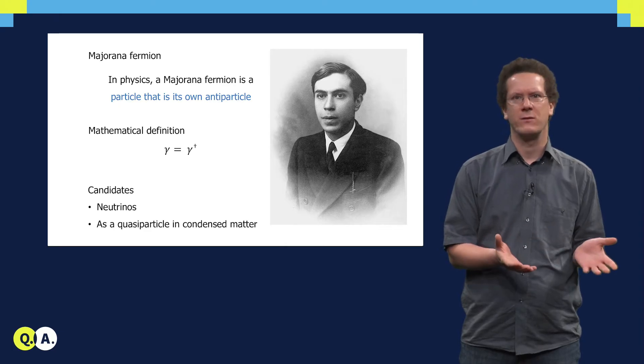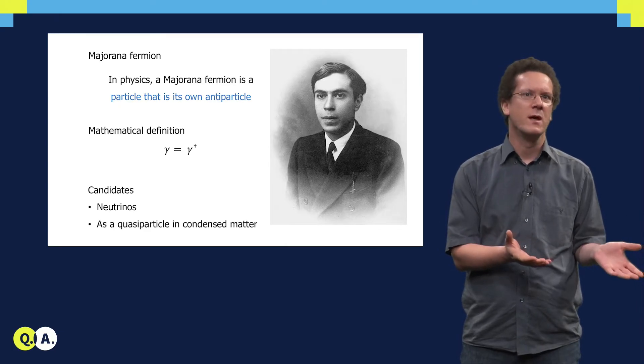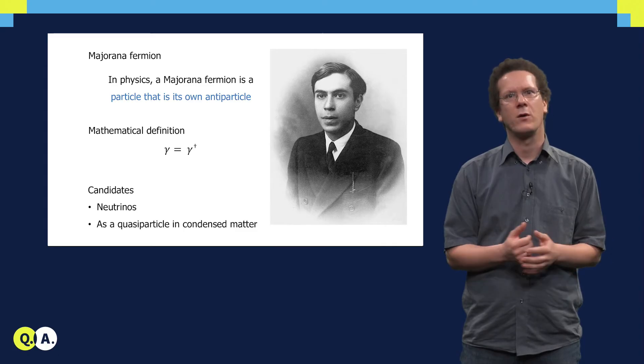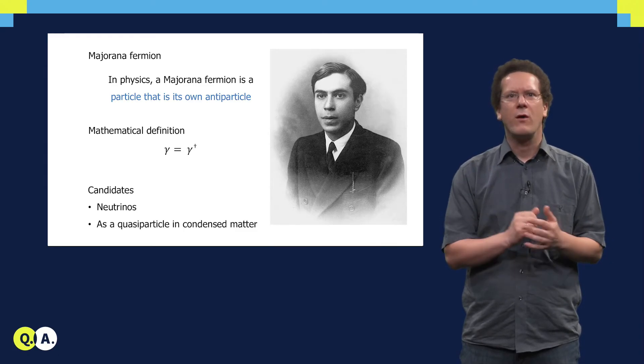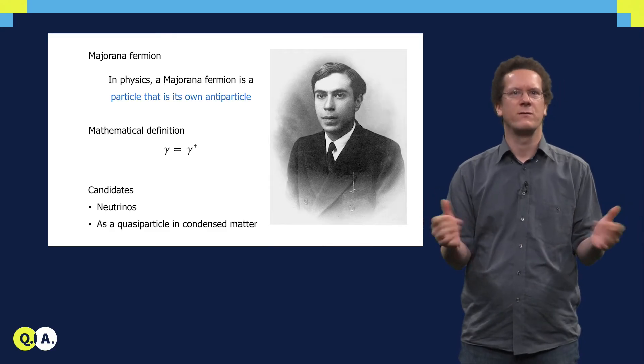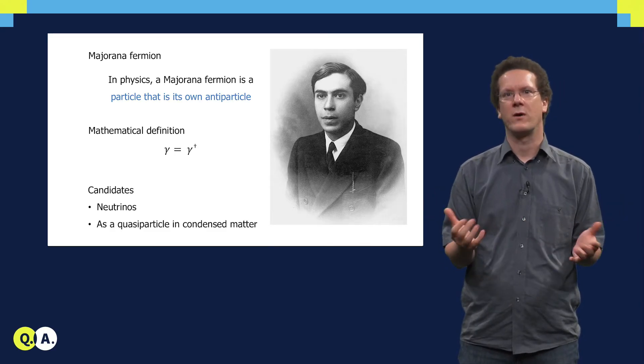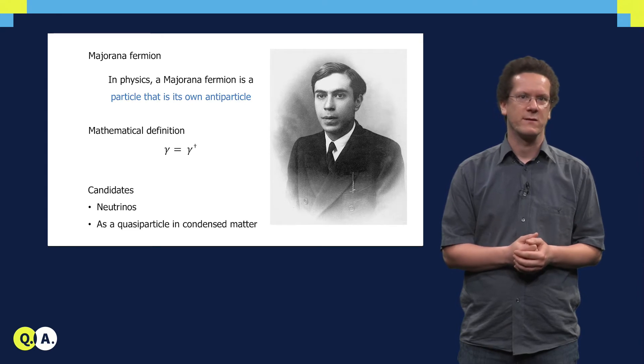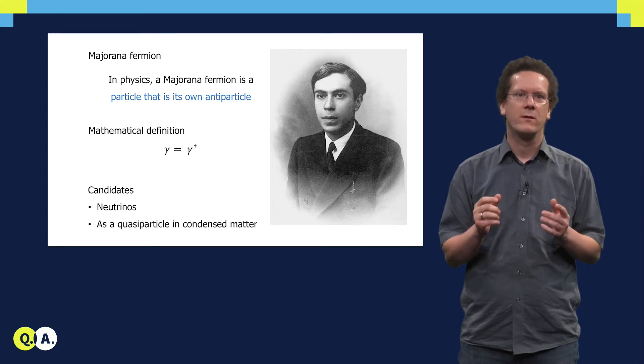There are some candidates for these Majorana fermions. For example, in high energy physics neutrinos are generally described as Dirac fermions, but there is an extension to the standard model in which they could be Majorana fermions. But people have also thought about how one could effectively realize Majorana fermions as quasi-particles in condensed matter systems. This will be the topic of this lecture.